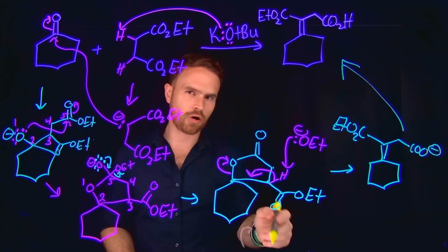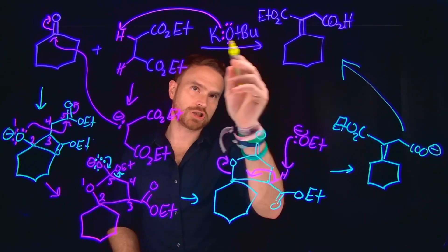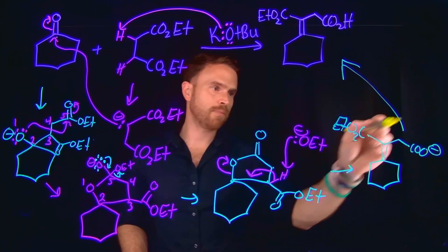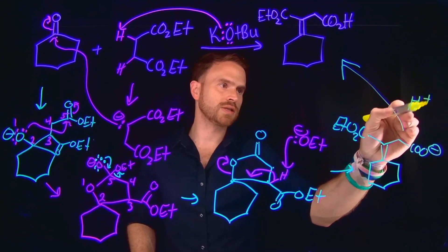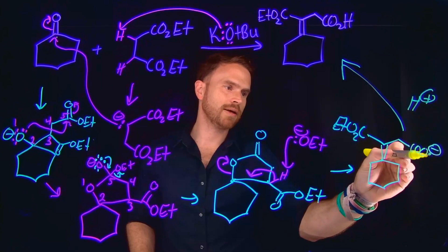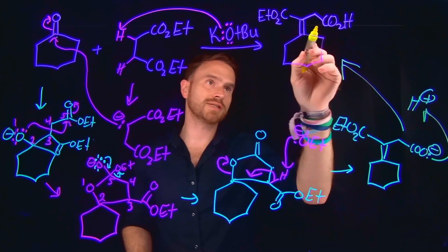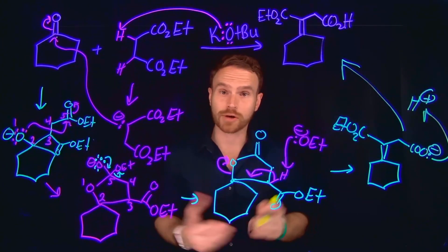We generated ethanol here, we also generated tert-butanol in our first step, which means that we have proton sources which can come and protonate this position in order to give us this carboxylic acid that's formed in our final product.